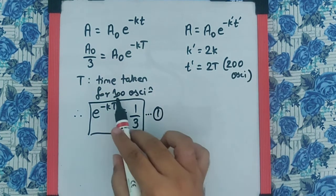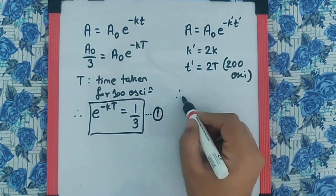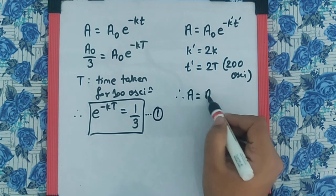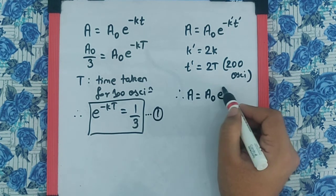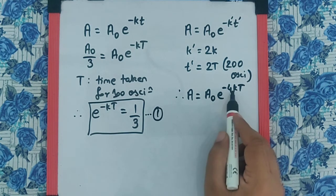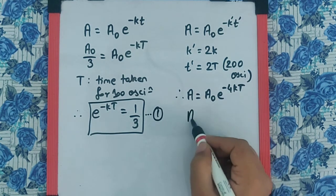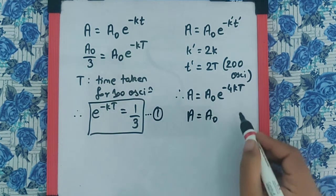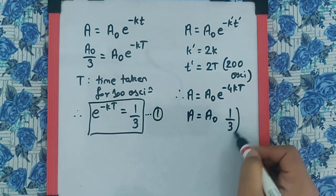So it's basically double the T. Now if I substitute A is equal to A₀, it becomes e raised to minus 4kT. So e raised to minus 4kT is nothing but A is equal to A₀, 1 by 3, the whole raised to 4.